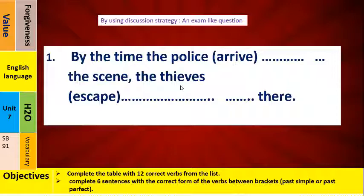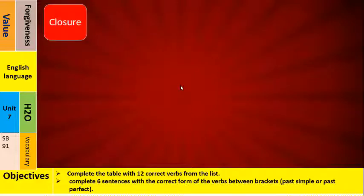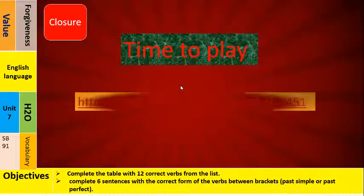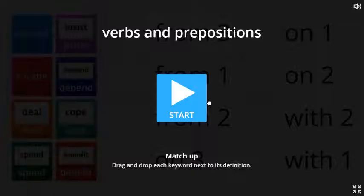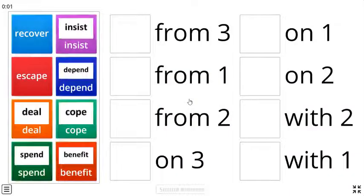And now let's finish our lesson, and this means that here we reach it the time to play a Wordwall game: verbs and prepositions. How many from and how many on and how many with? So we will match between the verbs and we will consider each correct matching correct.